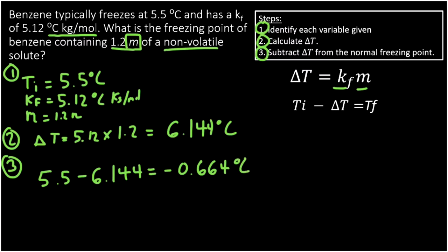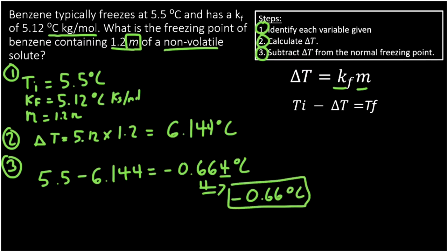At the end of our problem, we consider significant figures. Our initial freezing point and benzene concentration both have two sig figs, so we round to two sig figs. Because the 4 is less than 5, it rounds down to minus 0.66 degrees Celsius — that's the new freezing point of the benzene solution.